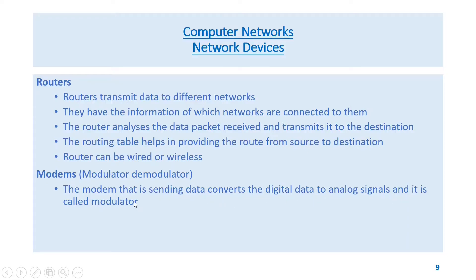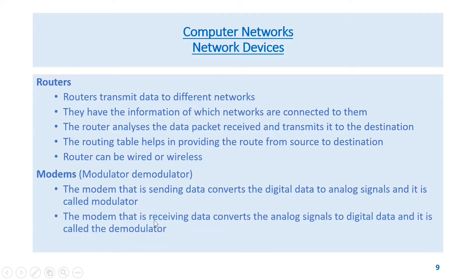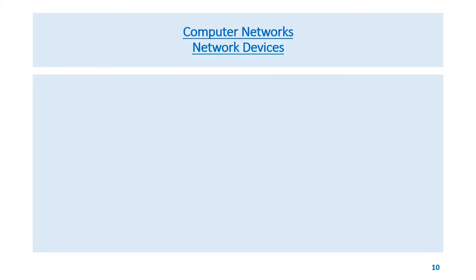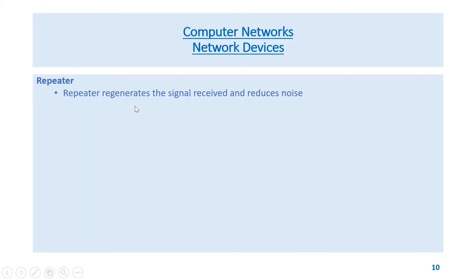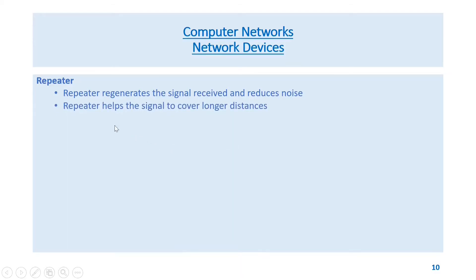Modems (Modulator-Demodulator): The modem sending data converts digital data to analog signals — this is called the modulator. The modem receiving data converts analog signals to digital data — this is called the demodulator. Repeaters regenerate the signal received, reduce noise, and help the signal cover longer distances.